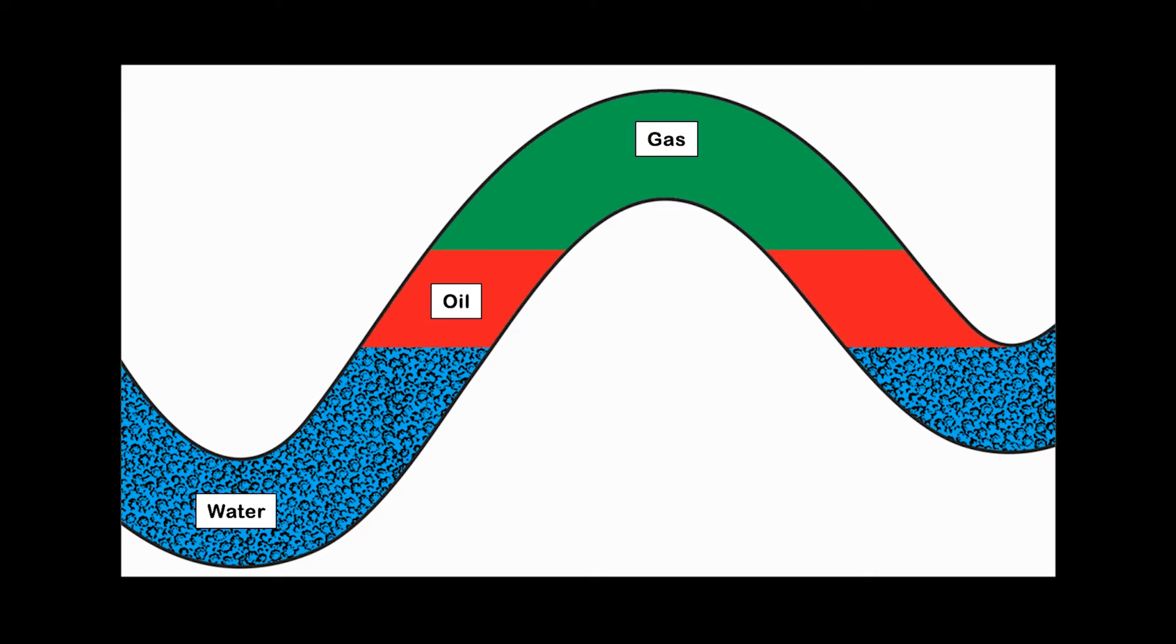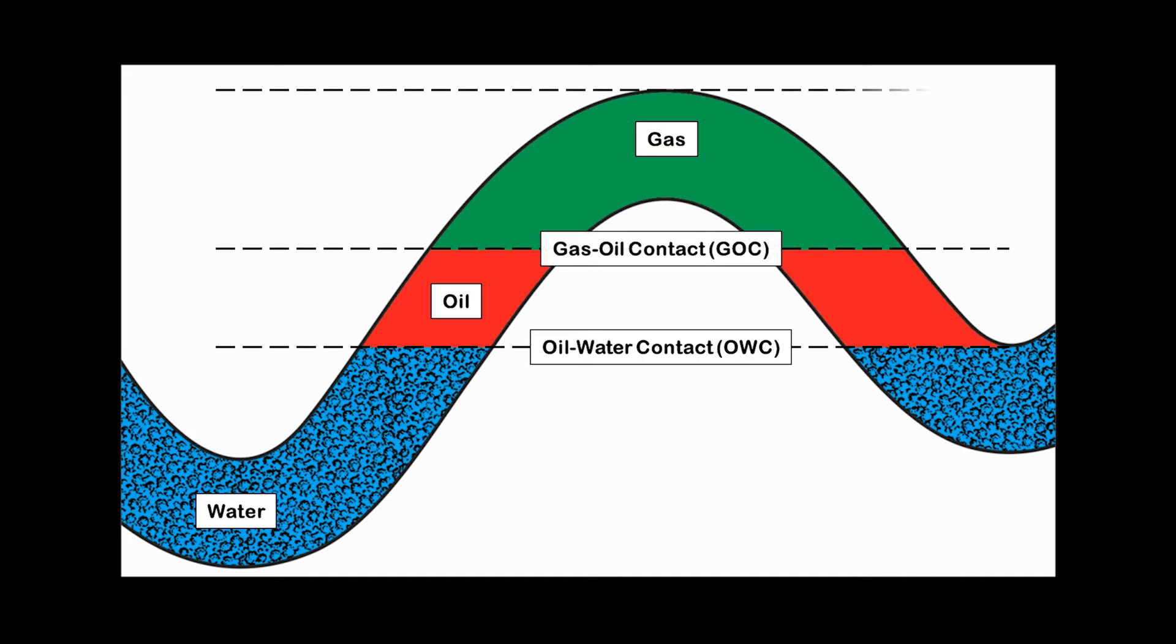Finally, gas-saturated, oil-saturated, and water-saturated rock are present. We now have two contacts, one being the oil-water contact and the gas-oil contact. In this case, the gas in the trap is called the gas cap. Again, why would we have a combination of oil and gas in this trap?